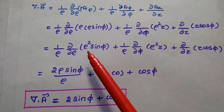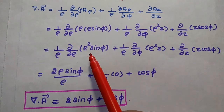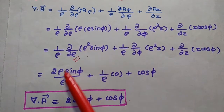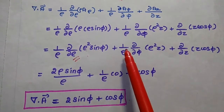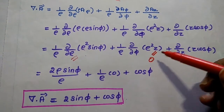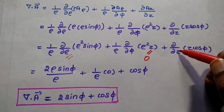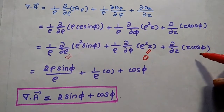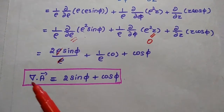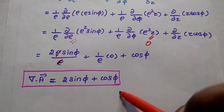Differentiating ρ² sinφ with respect to ρ gives 2ρ sinφ, so the first term becomes (1/ρ)(2ρ sinφ) = 2 sinφ. For the second term, ρ²z has no φ term, so it becomes 0. Differentiating z cosφ with respect to z gives cosφ. Therefore, del dot A = 2 sinφ + cosφ.